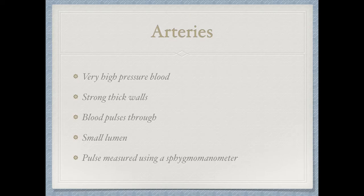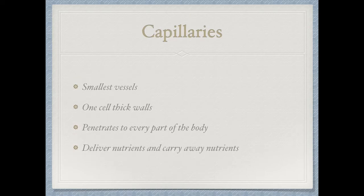Arteries are also made of very elastic tissue so they can stretch and recoil with the force of the blood. Now, capillaries — the blood flows from an artery into the capillaries and then back into a vein; that is always the order in the body. Capillaries are the smallest vessels, some of them only one cell thick. They penetrate to every part of the body and not a cell is very far away from a capillary. These capillaries deliver nutrients and carry away waste products.